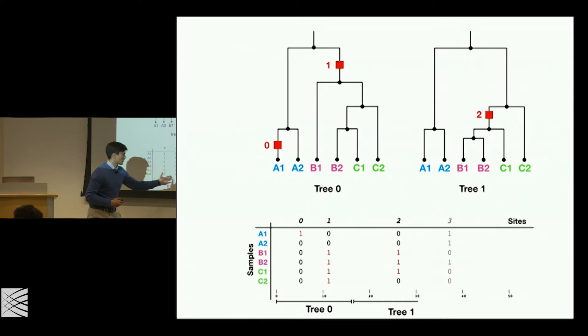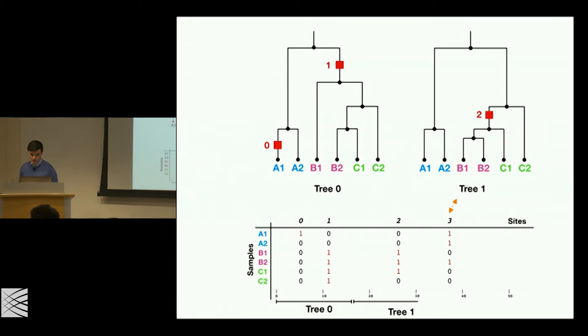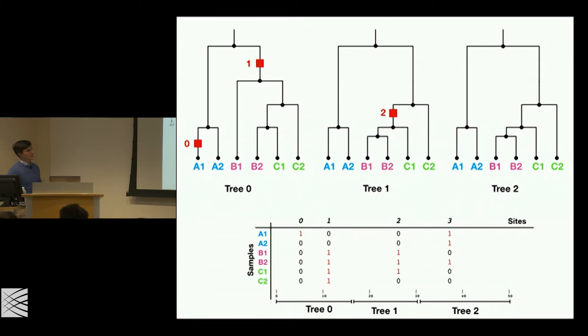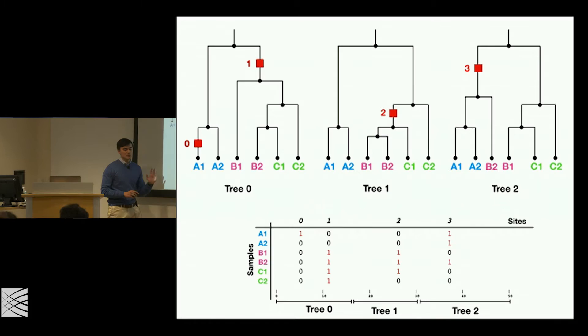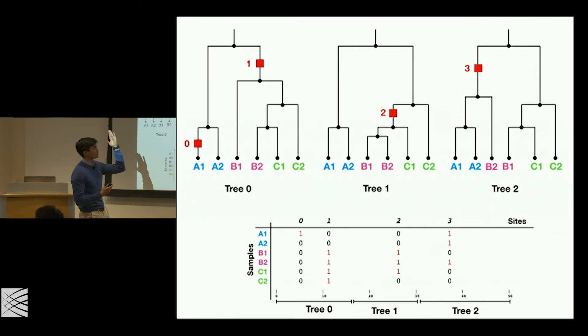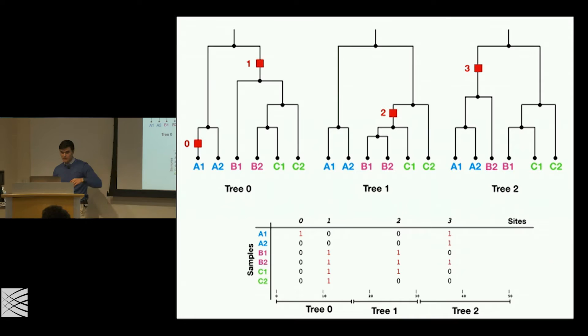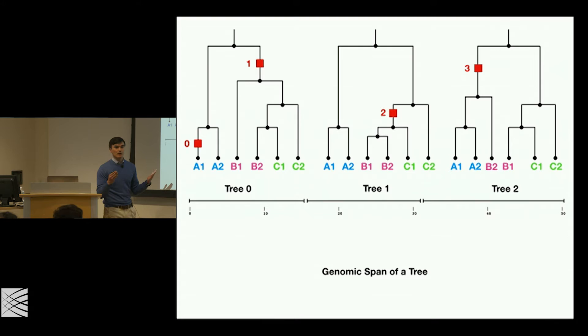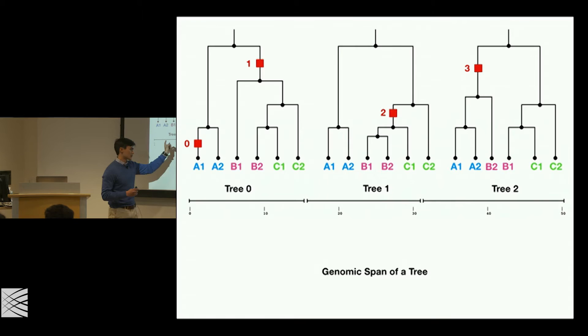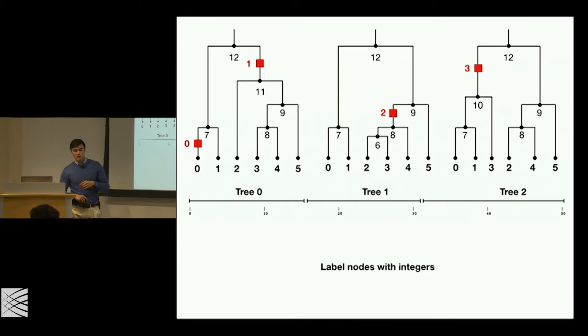The first tree spans from zero to 15 base pairs. There was a recombination event at position 15, and now we have this new tree generated by the subtree prune and regraft. That will keep going until there's another recombination event. Looking at site three, we do another subtree prune and regraft — cutting the subtree leading to B2 and regrafting it elsewhere, dropping another mutation there. Tree two explains variation from base pair 30 onwards. You can think of this as the genomic span of each tree.